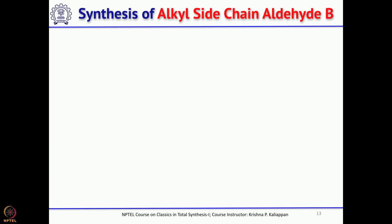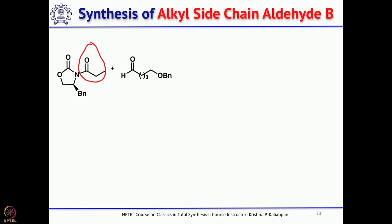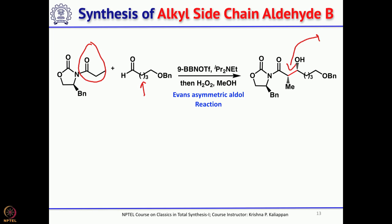For synthesis of the aldehyde fragment B, the group started with Evans' chiral auxiliary with propionic acid anhydride attached. Boron enolate followed by aldol reaction with an aldehyde — the classical Evans asymmetric aldol reaction — gave the syn-aldol product. The chiral auxiliary was then removed by treating with lithium hydroxide and hydrogen peroxide to give the carboxylic acid.